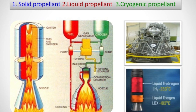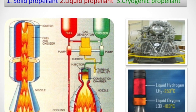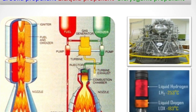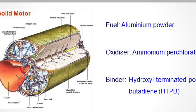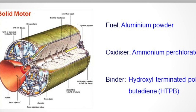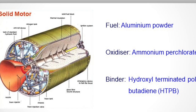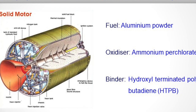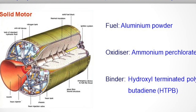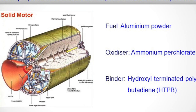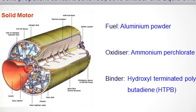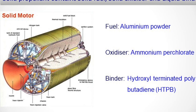Now we will see the different types of propellants. According to their nature, they can be divided into three: solid, liquid, and cryogenic propellants. Coming to solid propellant, here the fuel and the oxidizer are in solid nature — they are solid chemical powders. For making a solid propellant, these powders are mixed with the help of a liquid called a binder. The binder is a polymer with long chain molecules. The ingredients of a solid propellant are: a fuel, an oxidizer, and a binder.